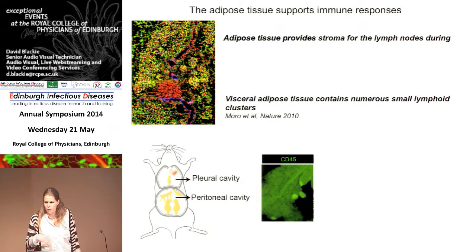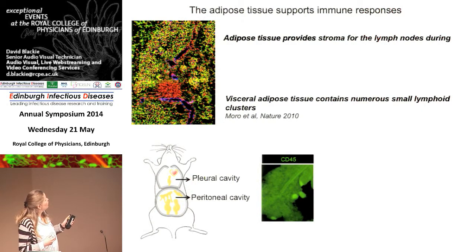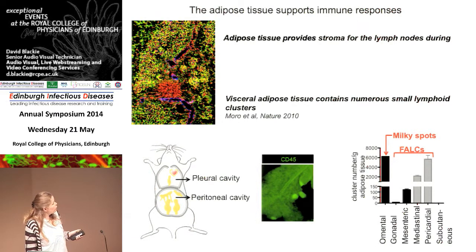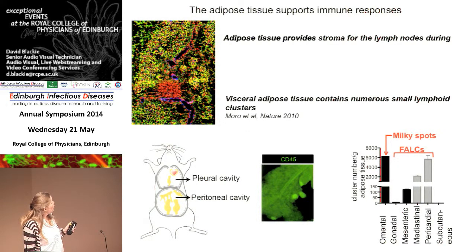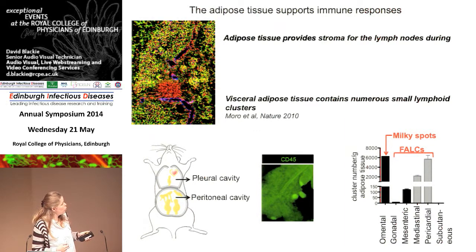We also realized that adipose tissue was supporting the development of other lymphoid structures in the visceral adipose tissue. In the pericavity you find the mediastinal and pericardial adipose tissue. In the peritoneal cavity you have the omentum, which contains a lot of milky spots and lymphoid clusters — the highest number. In the pericardial cavity you have the mesenterium with an intermediate number of clusters. Then you have very large fat depots like the gonadal adipose tissue, which have very few lymphoid clusters, close to zero.